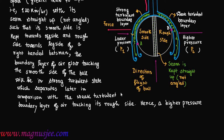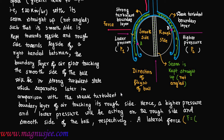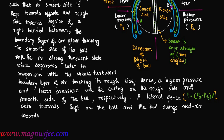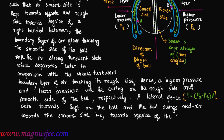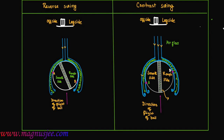As a result, higher pressure and lower pressure will be acting on the rough side and smooth side of the cricket ball respectively. A lateral force F equal to (P2 minus P1) into A — that is, pressure difference multiplied by the area of cross-section of the ball — acts towards the left with respect to the ball, and the ball swings in mid-air towards the smooth side of the cricket ball, meaning the ball swings towards the offside of a right-handed batsman. Now we can compare reverse swing and contrast swing.